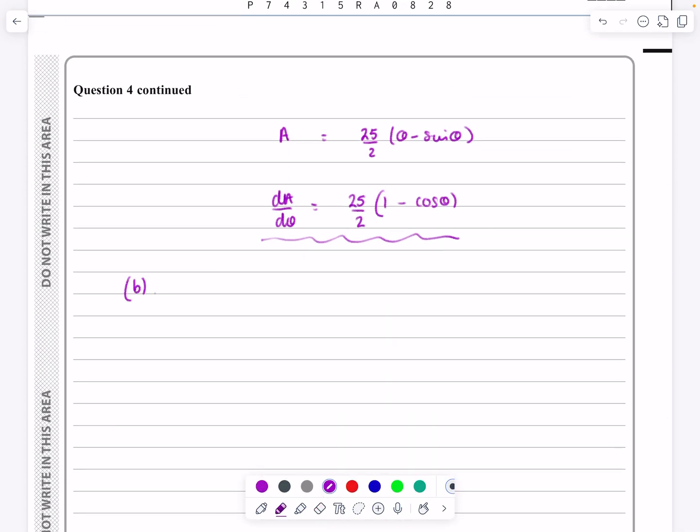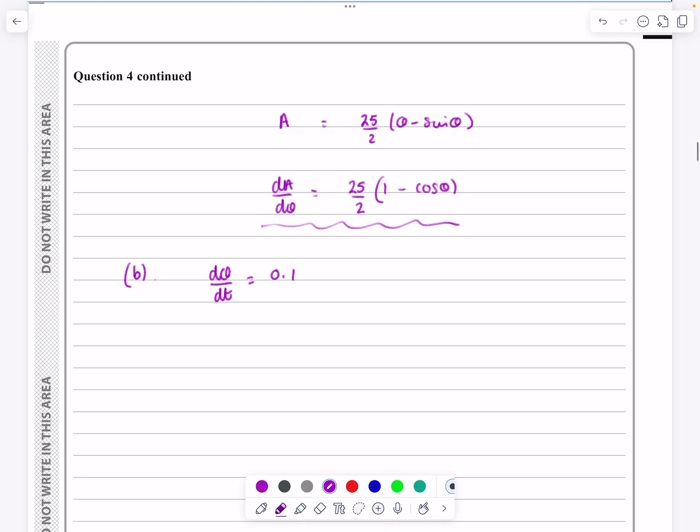So let's make it clear to the examiner. We were told that dθ by dt was equal to 0.1 in the question. I'm being asked to find dA by dt, and dA by dt is dA by dθ multiplied by dθ by dt, because then they will cancel and I'll still get the dA by dt.